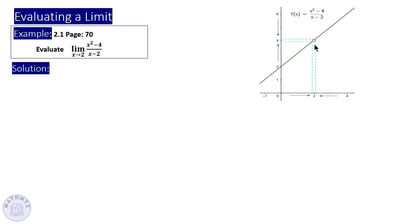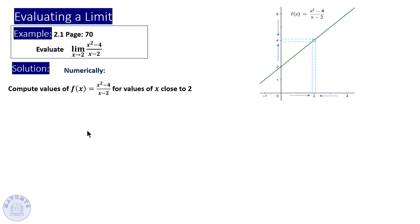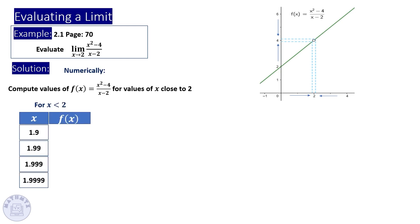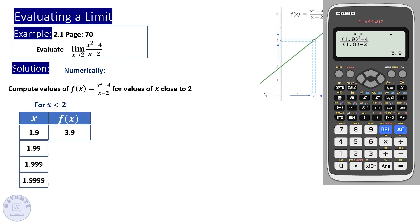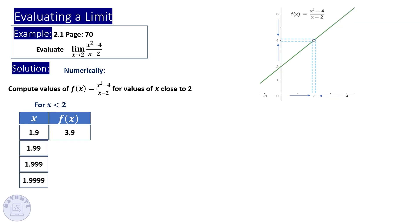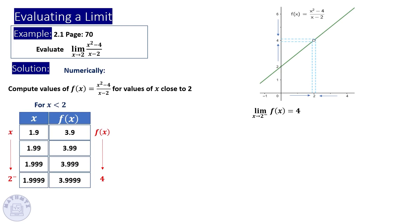At x = 2 exactly, there is an open circle, meaning the function is not defined — substituting 2 gives 0 in the denominator. So we compute values close to 2 using a table. Using your calculator, substitute x = 1.9 and you get 3.9. As we get closer to 2 from the left, the y-values approach 4. The left-sided limit equals 4.